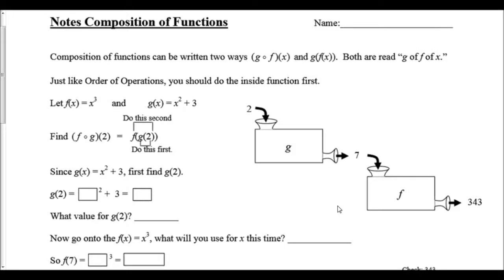Composition of functions can be written in two ways: g∘f(x) and g(f(x)). Both are read 'g of f of x.' Just like order of operations, you should do the inside function first. We're going to have two functions: f(x) = x³ and g(x) = x² + 3.